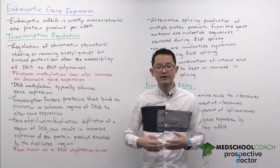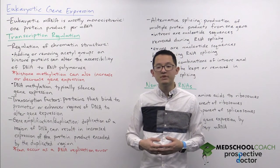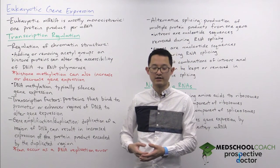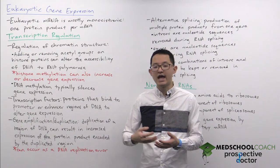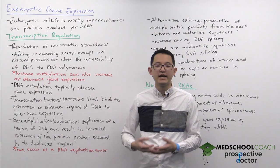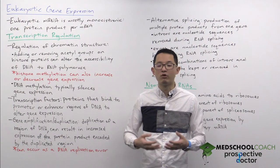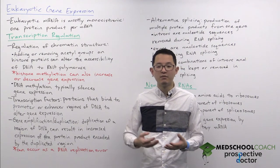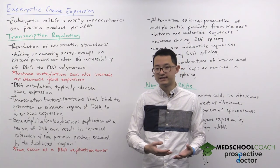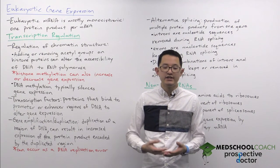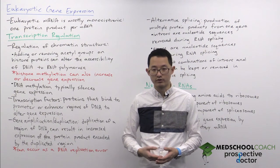Now, there are some pros to this approach. Eukaryotes, unlike prokaryotes, can be multicellular organisms. And by having each protein product under the control of a separate mRNA and promoter, it allows different cells to express different combinations of proteins more easily, allowing for more diversity in gene expression. The downside, of course, is that gene expression regulation is far more complex in eukaryotes than in prokaryotes.